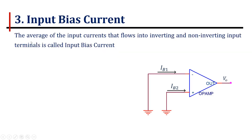The input bias current: the average of the input currents that enters into the inverting and non-inverting input terminals is called input bias current. If IB1 and IB2 are two input currents that enter into inverting and non-inverting terminals, then their average is called input bias current. The typical maximum value of the input bias current is 500 nanoamps.